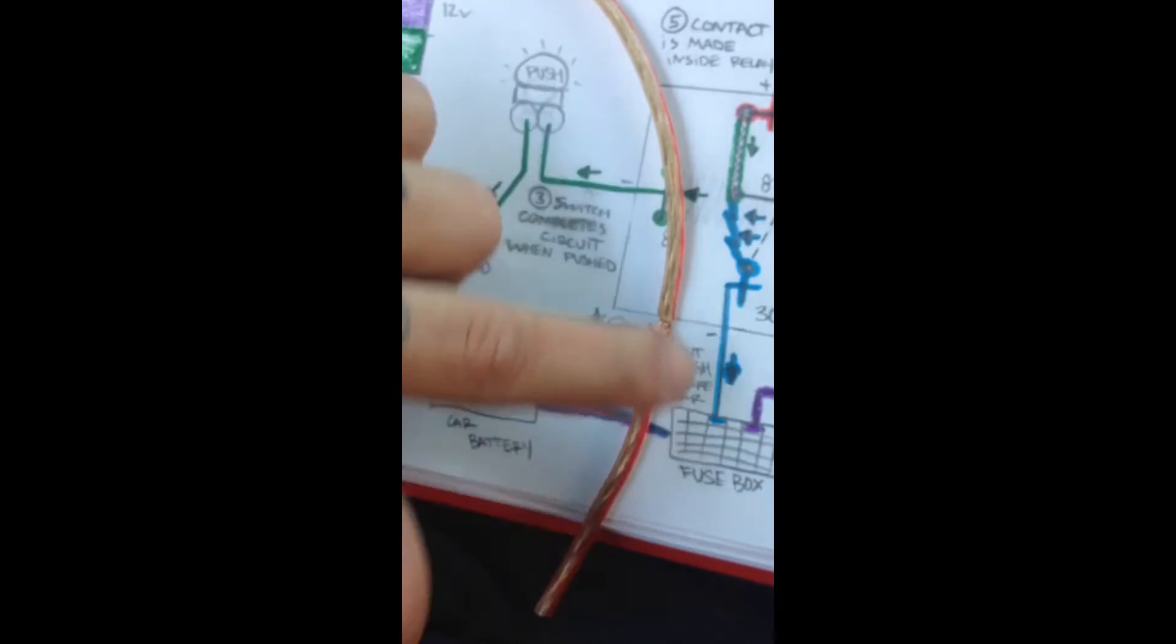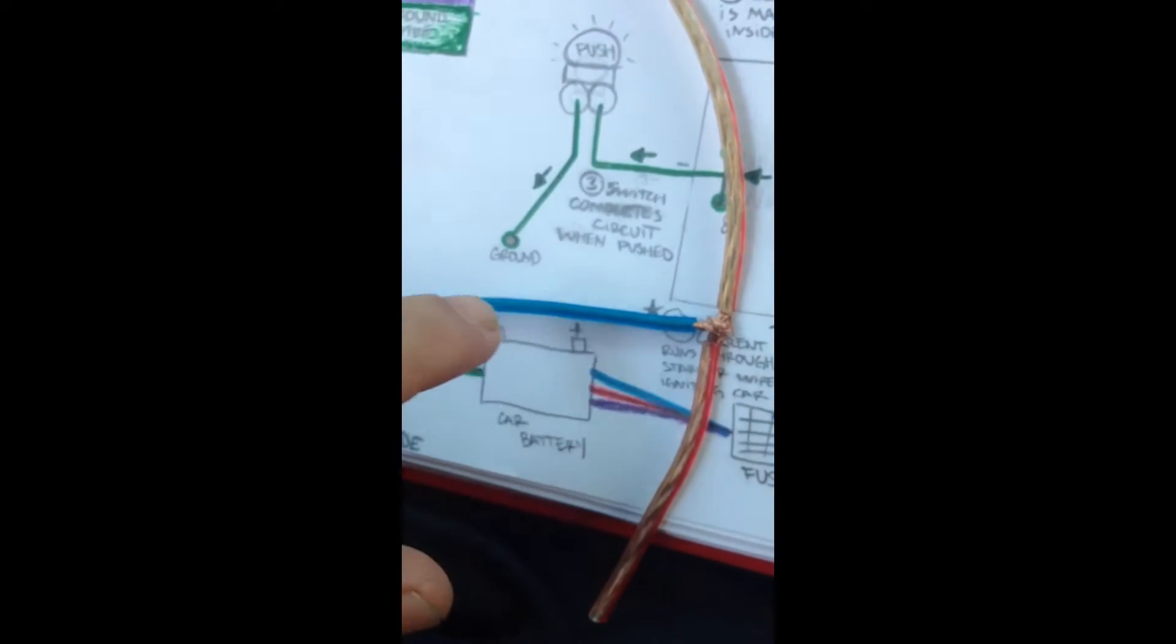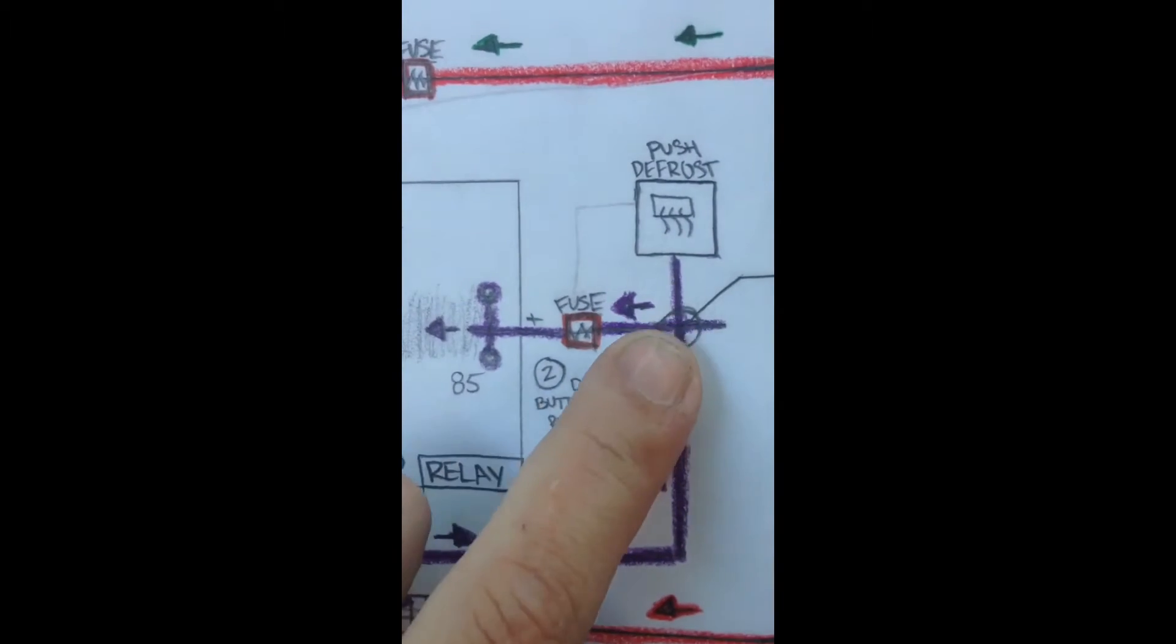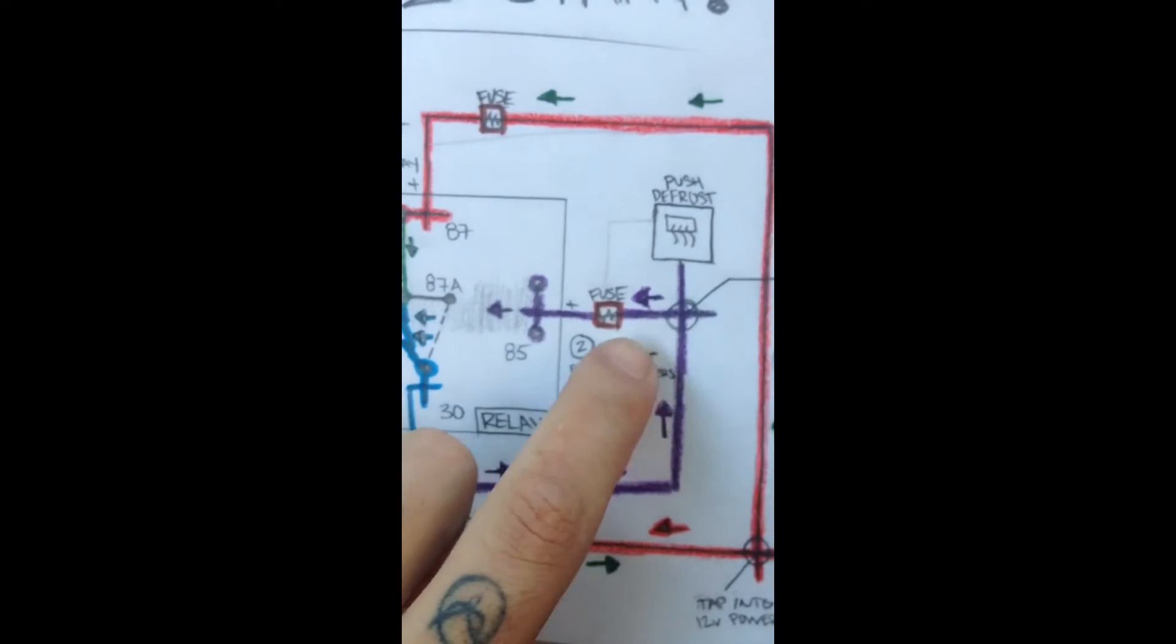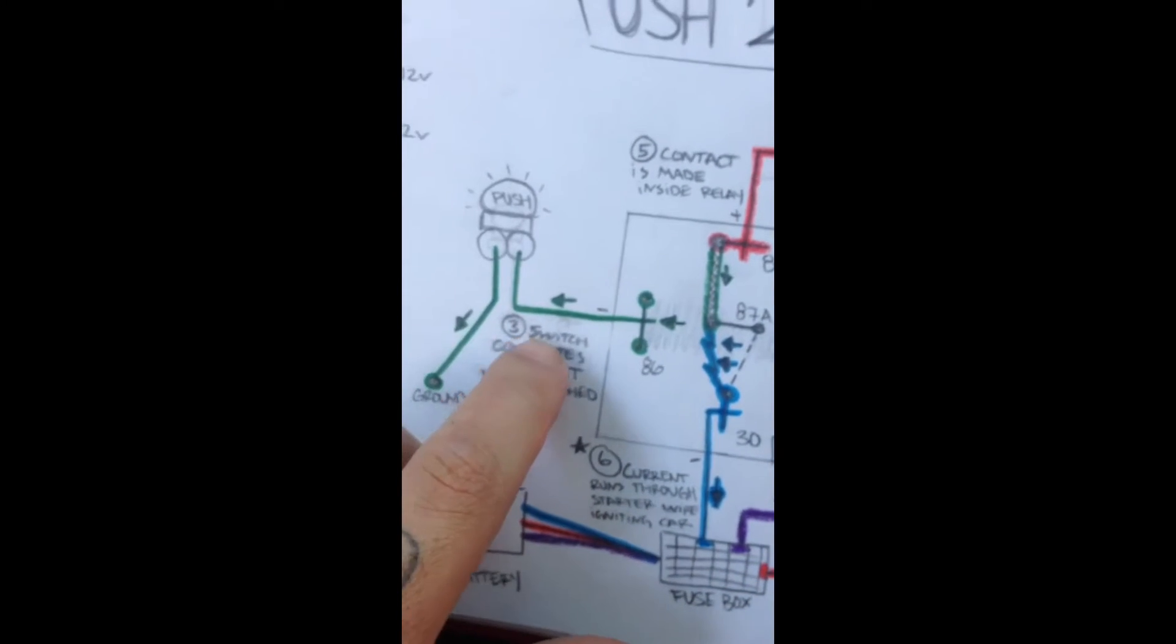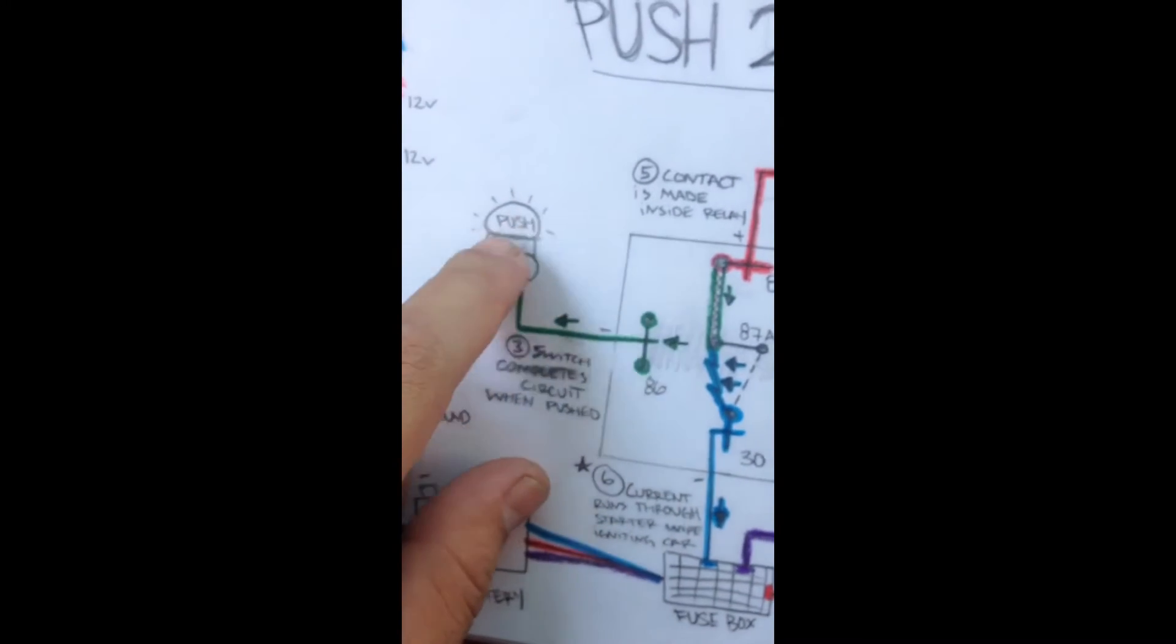So this is your defrost power wire, and this is where you're bypassing for your relay. So that's what I have right here, bypass. As soon as you push your defrost button, your bypass gives power to your relay.